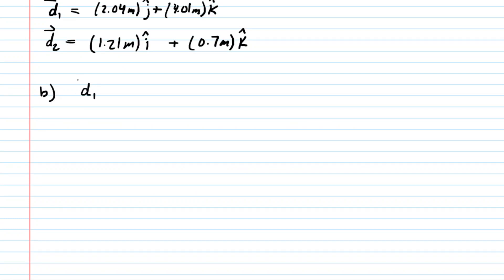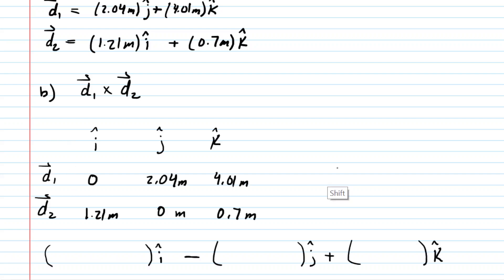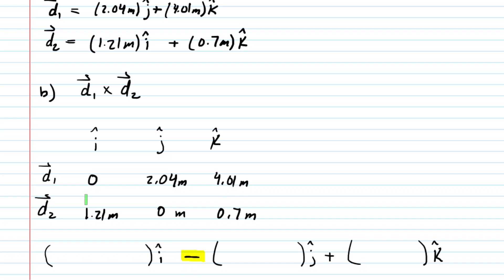Part B asks us to compute the cross product of these two vectors, which is a bit more elaborate. We set up a cross product template, listing the I hat, J hat, and K hat components of each vector in a table. Below that we have three sets of parentheses — please notice that the middle parentheses has a minus sign. That minus sign is very important: the first and last terms are positive, but the middle J hat term must be negative.